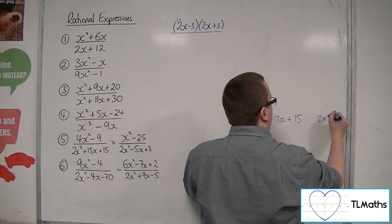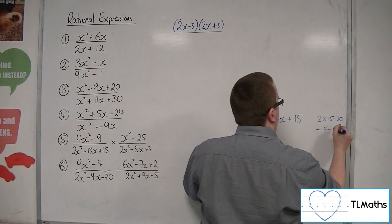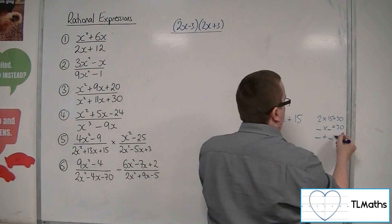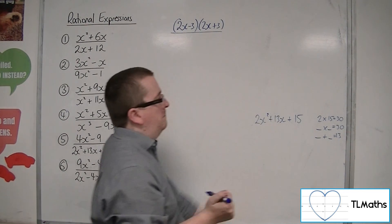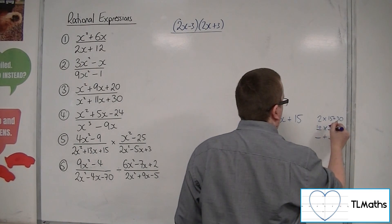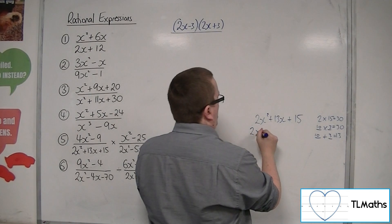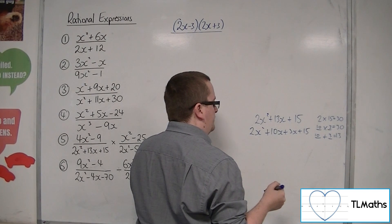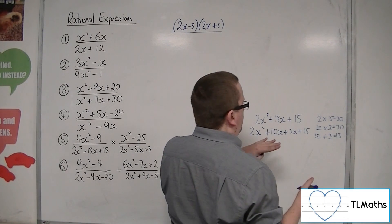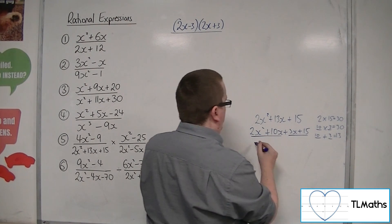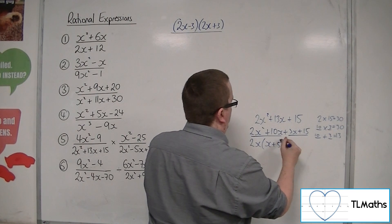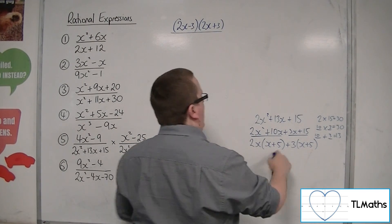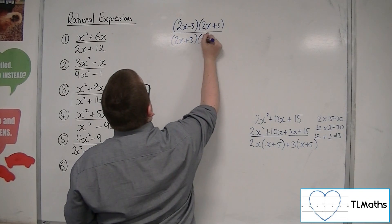So 2 times 15 is 30. We need two numbers that multiply together to make 30 but add together to make 13. That gives us 2x squared plus 10x plus 3x plus 15. We can then factorise both halves: 2x lots of x plus 5, plus 3 lots of x plus 5. So we get 2x plus 3 and x plus 5.